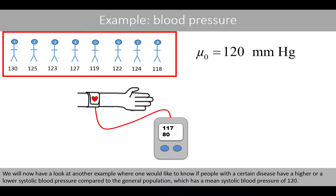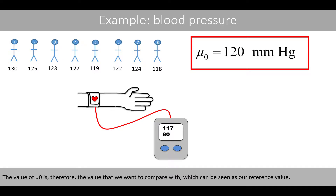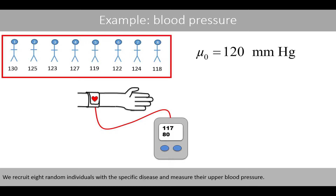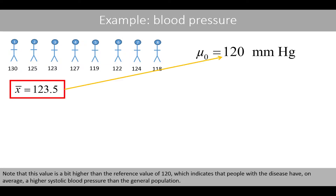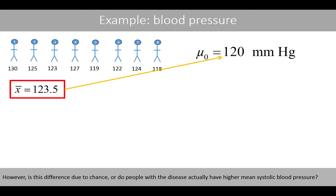We'll now have a look at another example where one would like to know if people with a certain disease have a higher or lower systolic blood pressure compared to the general population, which has a mean systolic blood pressure of 120. The value of mu-zero is therefore the value that we want to compare with, which can be seen as our reference value. We recruit 8 random individuals with a specific disease and measure their systolic blood pressure. The mean systolic blood pressure of these 8 individuals is 123.5, which is a bit higher than the reference value 120, indicating that people with the disease have, on average, a higher systolic blood pressure than the general population. To answer whether this difference is due to chance, we can use a one-sample t-test.